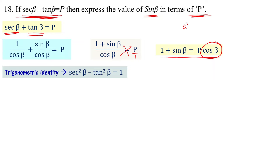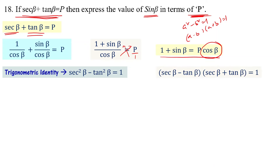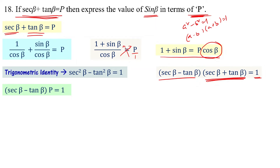Using the formula a squared minus b squared equals 1, we write: sec beta minus tan beta times sec beta plus tan beta equal to 1. Substituting sec beta plus tan beta equal to p, we get sec beta minus tan beta times p equal to 1. Transposing gives sec beta minus tan beta equal to 1 by p.